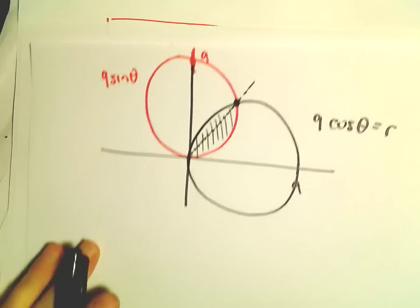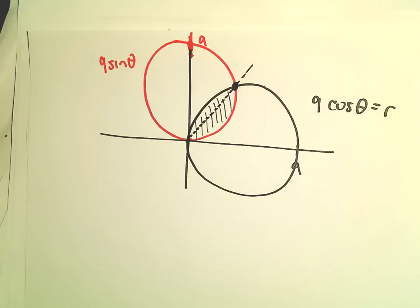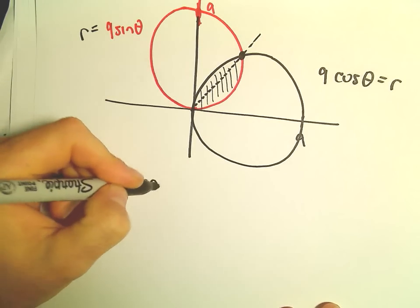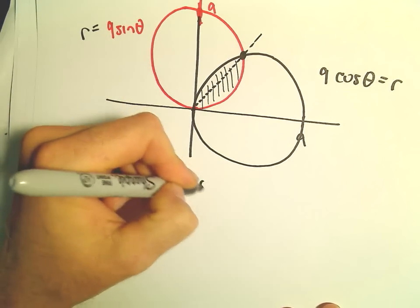So what I'm going to do is just set those two curves equal to each other. We would have 9 sine theta equals 9 cosine theta.